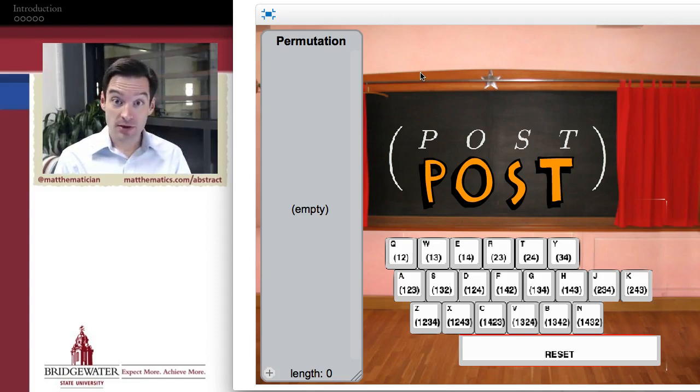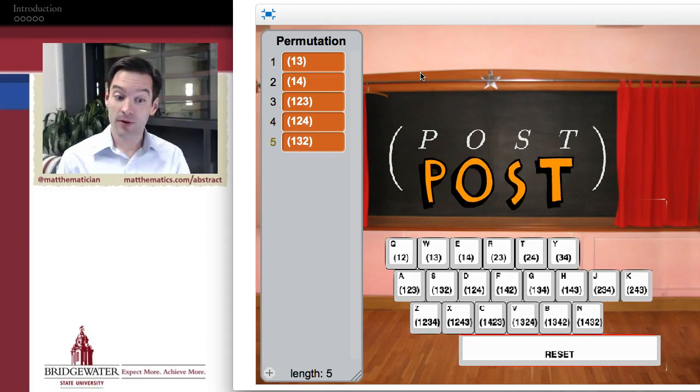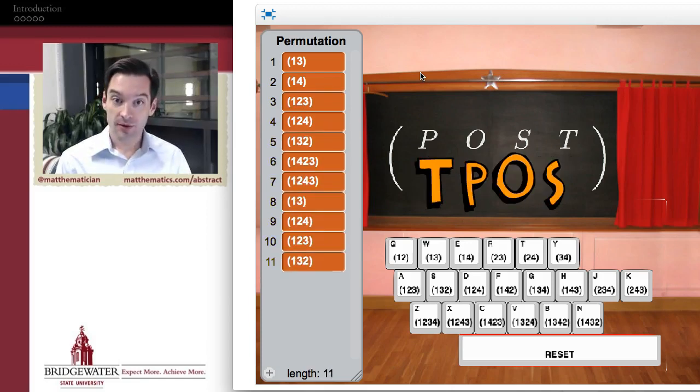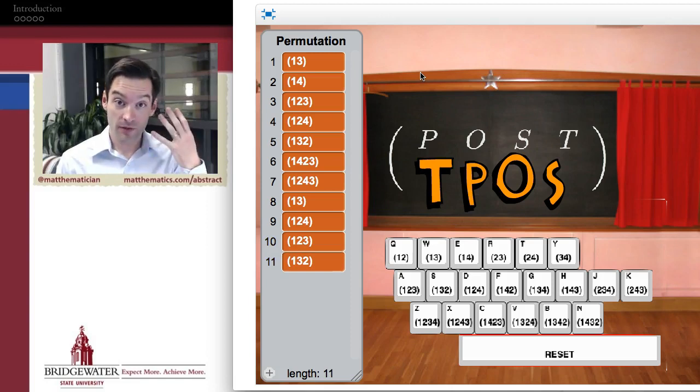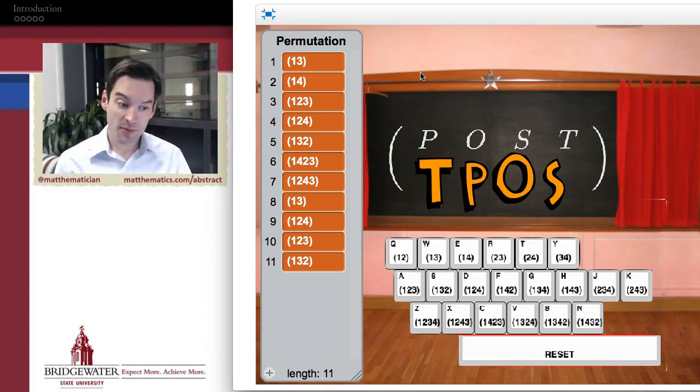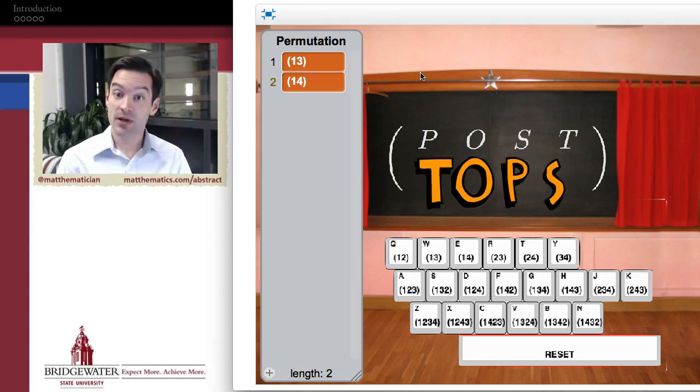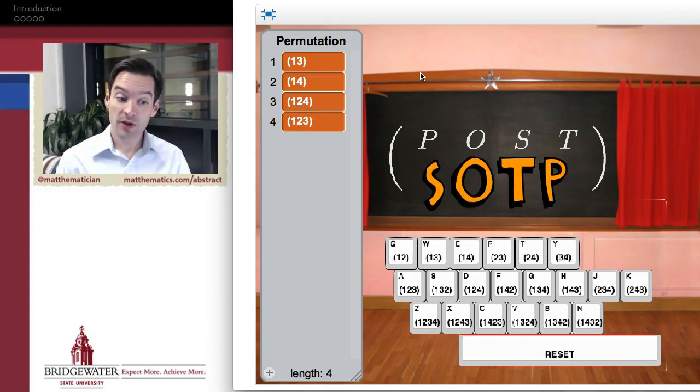If I take and rearrange some of the letters in this word, then I get other words, and every one of these rearrangements is going to be a permutation of the finite set of four elements P, O, S, and T. Some of them spell words, some of them don't, but the point is any way in which I can rearrange these four letters will give me a permutation.